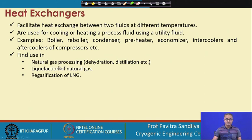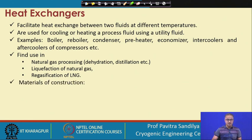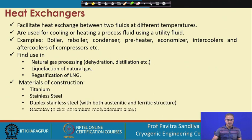These heat exchangers are used in natural gas processing for dehydration, distillation, liquefaction of natural gas, and re-gasification of LNG. As we take up the various steps in natural gas processing, we will find that these heat exchangers come in different forms in various systems. There are several materials with which these heat exchangers are constructed, such as titanium, stainless steel, duplex stainless steel, hastelloy, and copper alloys.